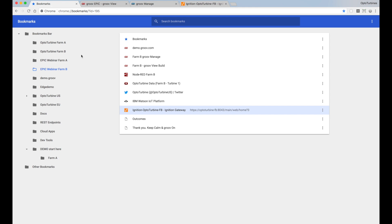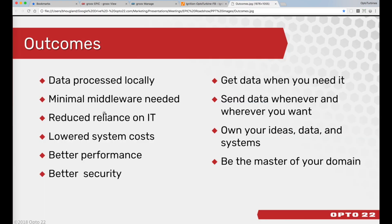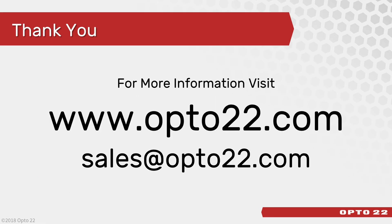That's a quick overview of the GrooveEpic system using these next-generation communication architectures — using Node-RED, GrooveView, and GrooveManage to configure it all. Our outcomes are simply that we get to process data locally with no middleware really needed at all, we've reduced our reliance on IT, and we've lowered our costs. Plus, we're getting much better performance and security throughout the system. Now you can get the data when you need it, send the data whenever you want, and really take charge of your projects moving forward. For more information, please check out www.opto22.com where you'll find data sheets, training, documents, and everything you need to learn more about how GrooveEpic can help you in your applications.